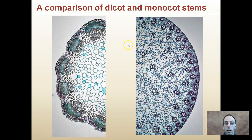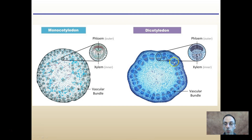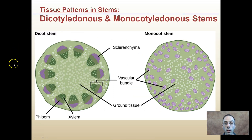A comparison between dicot and monocot stems: dicots are on the left and monocots on the right. You can see the much more scattered approach in monocots, while dicots keep vascular bundles towards the perimeter only, with a large central pith region. Remember, vascular bundles in both cases contain xylem to the inside and phloem to the outside, but dicots are organized along the perimeter while monocots are scattered throughout. A representative cartoon image shows this clearly, consistent with the microscopic images presented earlier.